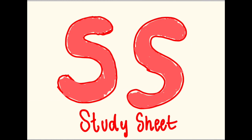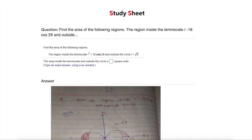Hello, and welcome back to Study Sheet. Find the area of the following regions. The region inside the lemniscate r squared equals 18 cosine 2 theta and outside the circle r equals square root 9.